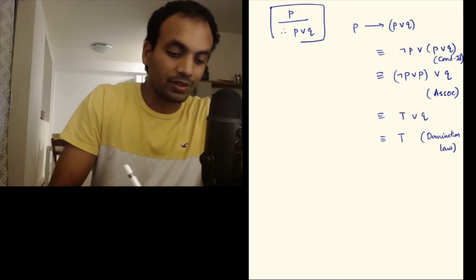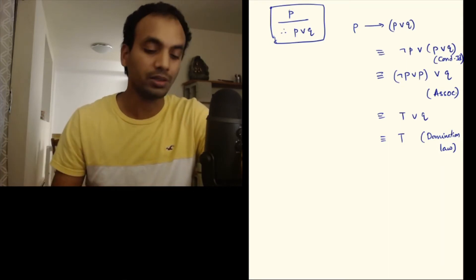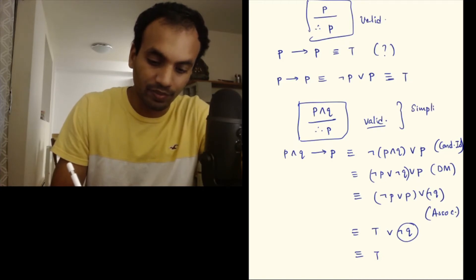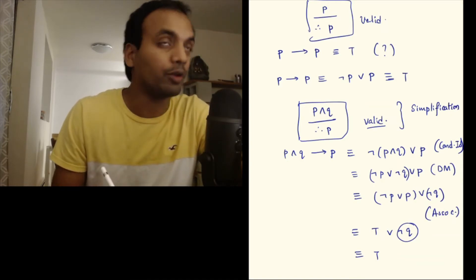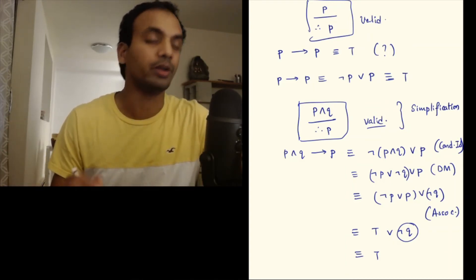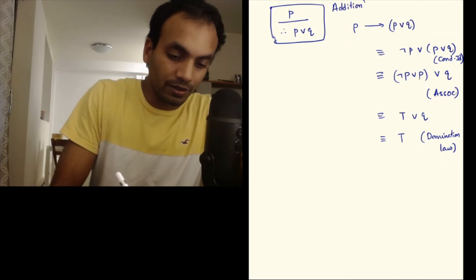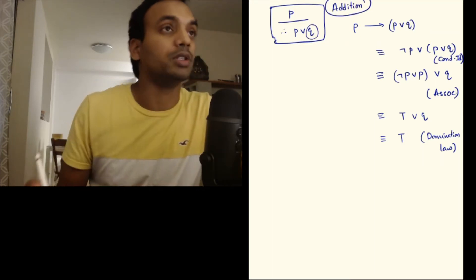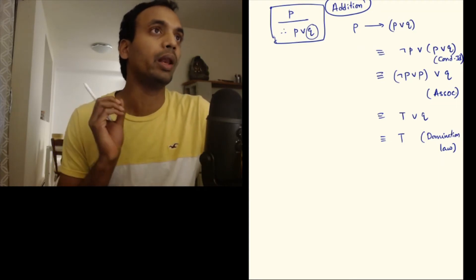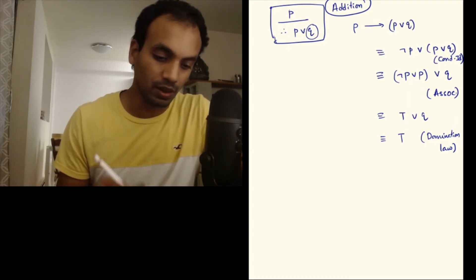The arguments we've been dealing with actually have names. Just like laws of propositional logic, we have some basic arguments from which we can build more complicated ones. This is called simplification — p and q, therefore p, and also p and q, therefore q. These are two separate arguments, both called simplification. And then you have addition: p, therefore p or q. It's called addition because you're adding a new proposition q. It doesn't matter what the truth value of q is — you can introduce a new proposition q when writing p, therefore p or q.